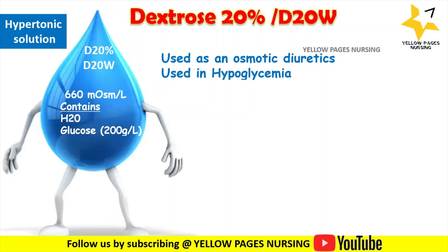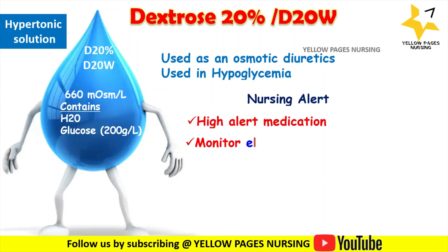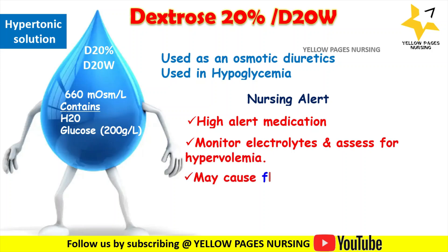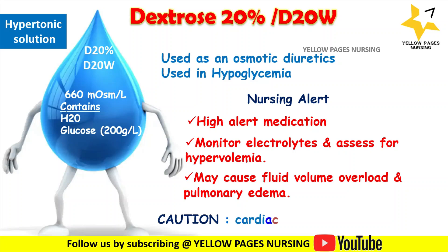In general, when hypertonic solutions are administered, monitor electrolytes and assess for hypervolemia, as they may cause fluid volume overload and pulmonary edema. They must be avoided in patients with cardiac or renal conditions who are dehydrated, and in patients with diabetic ketoacidosis.